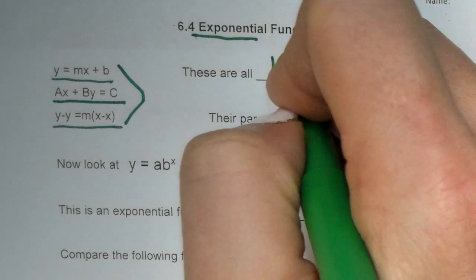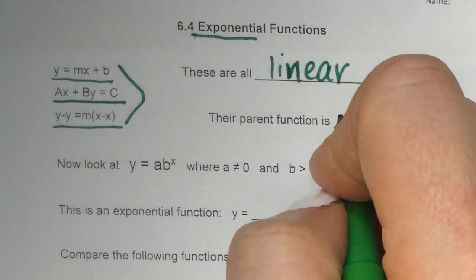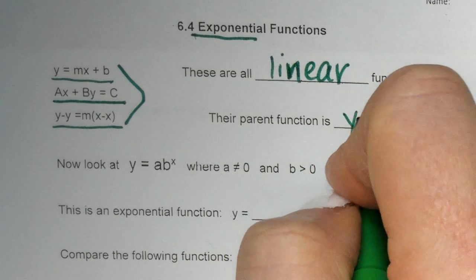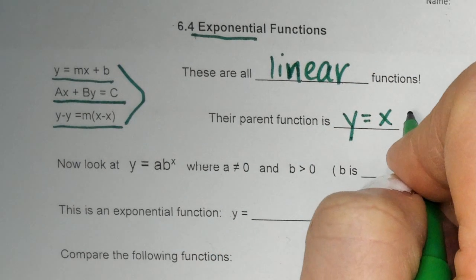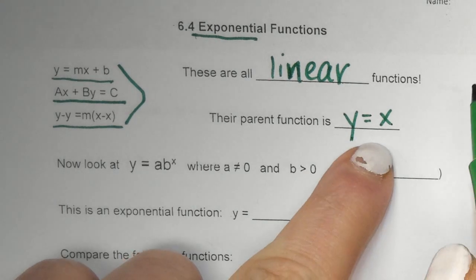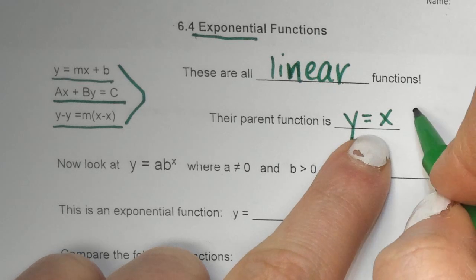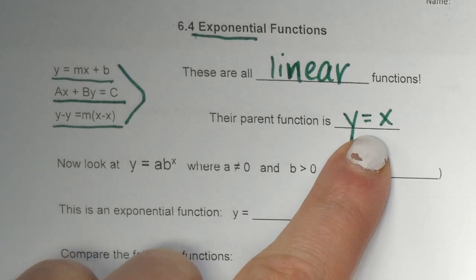Anyways, all of these are all linear functions. And since they're linear functions, I don't know if you remember this, but their parent function is basically Y equals X. There's no repeating X's. Y equals X. And they're all, it could be all in Y equals form.